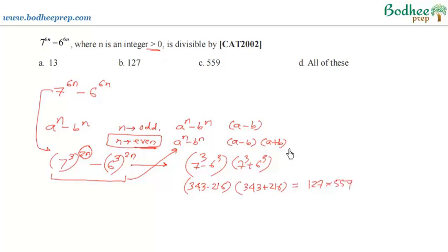So these two things are given in the options also, so B and C. So definitely by elimination we can say that D should be the answer, all of these. Although 13 we have not got it directly, but we can observe that this number is a multiple of 13. So the answer for this question is option D, that is all of these numbers.